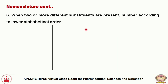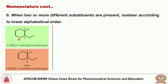When two or more different substituents are present, number according to the lower alphabetical order. For cyclohexane with methyl and ethyl substituents: E (ethyl) comes before M (methyl) alphabetically, so ethyl gets position 1 and methyl gets position 2 — giving 1-ethyl-2-methylcyclohexane (green, correct). Giving methyl position 1 and ethyl position 2 (2-ethyl-1-methylcyclohexane) is wrong (red).